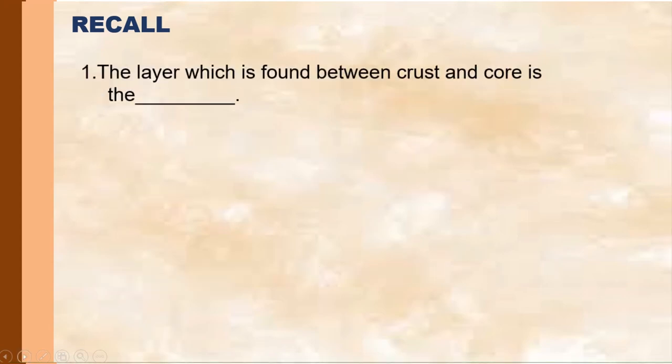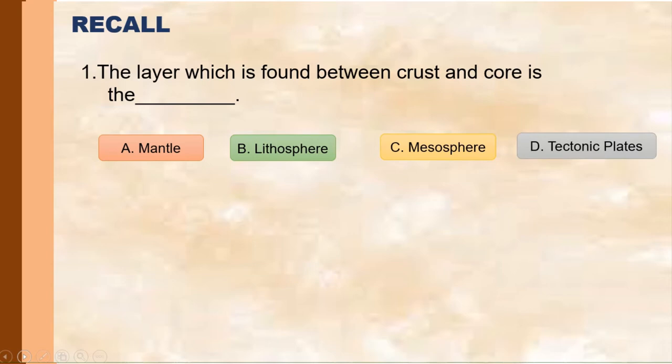Let's start with the recall. Question number one: The layer which is found between the crust and the core is the A mantle, B lithosphere, C mesosphere, D tectonic plates. And the correct answer is letter A, mantle.